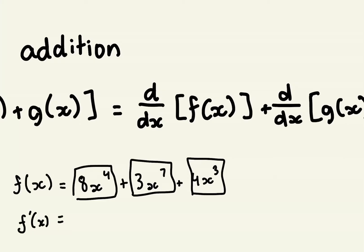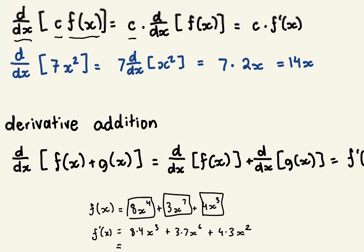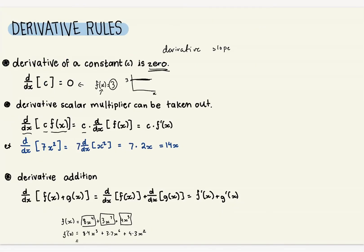f'(x) = 8 times 4 times x³ plus 3 times 7 times x⁶ plus 4 times 3 times x². You can go ahead and simplify that if you want. But basically, that's some basic derivative rules that it's good to be familiar with.